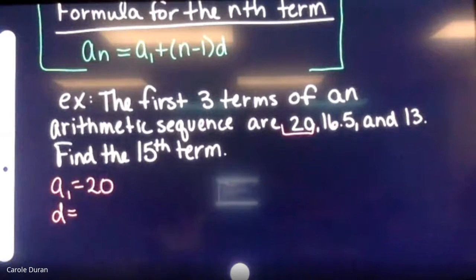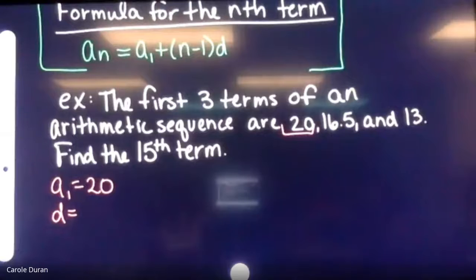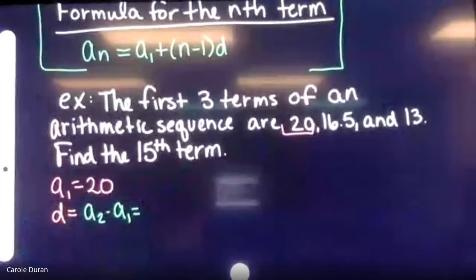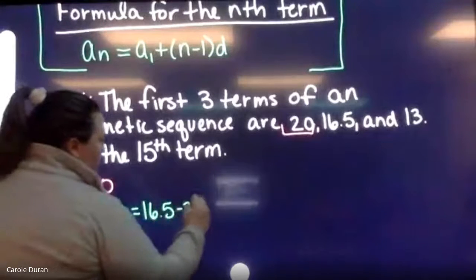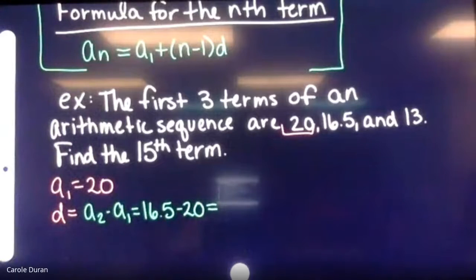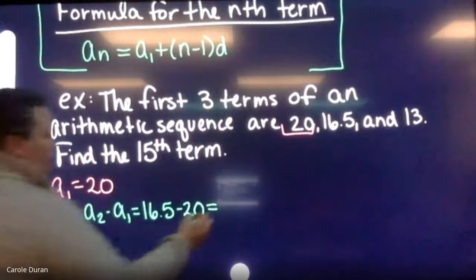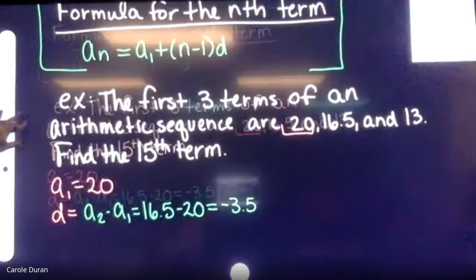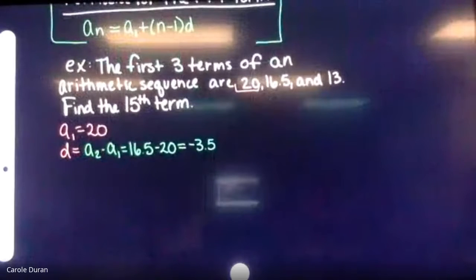It already told me this is arithmetic, so I only need to compute it once. To find d, I do a(2) minus a(1): 16.5 minus 20, which gives a common difference of negative 3.5. That negative is important — it tells me I'm subtracting 3.5 from term to term.